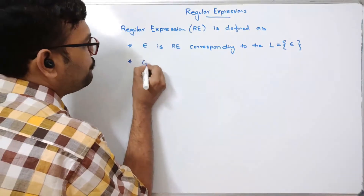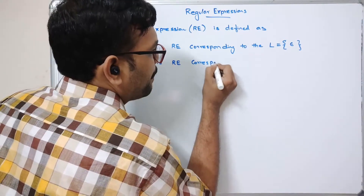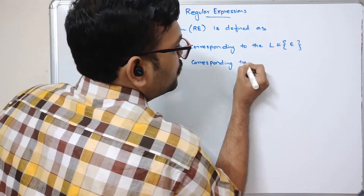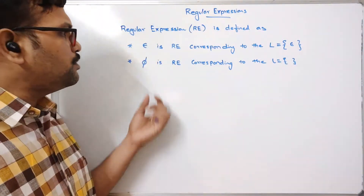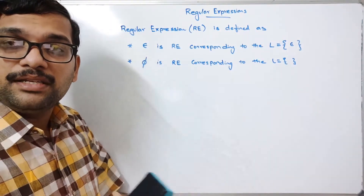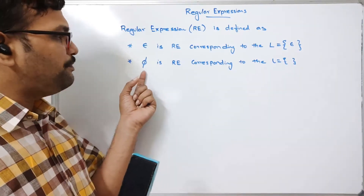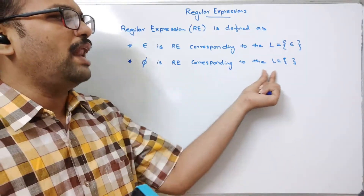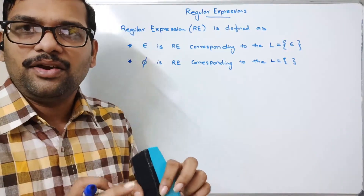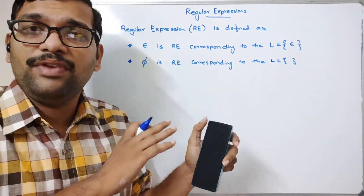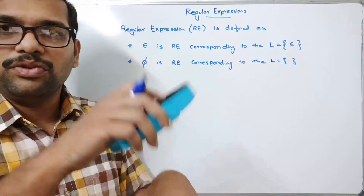One more point: phi is a regular expression corresponding to the language L equal to the empty set. Observe that both are different. Epsilon means null string — there is a string, but the length of the string is zero. But phi corresponds to the language L equal to empty set, meaning there is no string at all. That means the language does not have any string, whereas with epsilon the language has only one string where the string length is zero.